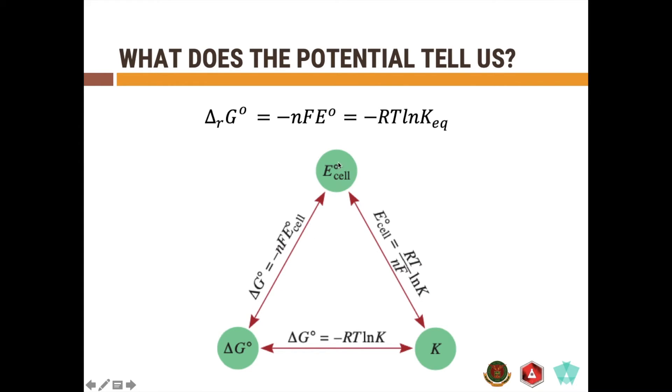And if you want to convert Ecell to the Keq, then you use Ecell = RT over nF ln Keq. So it's similar or just a rearrangement of these two equations. And a delta G-Keq correlation can be determined using this one, ΔG = -RTlnKeq.